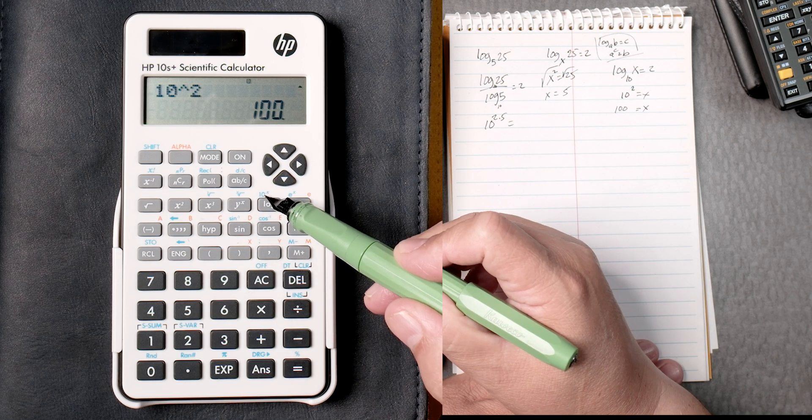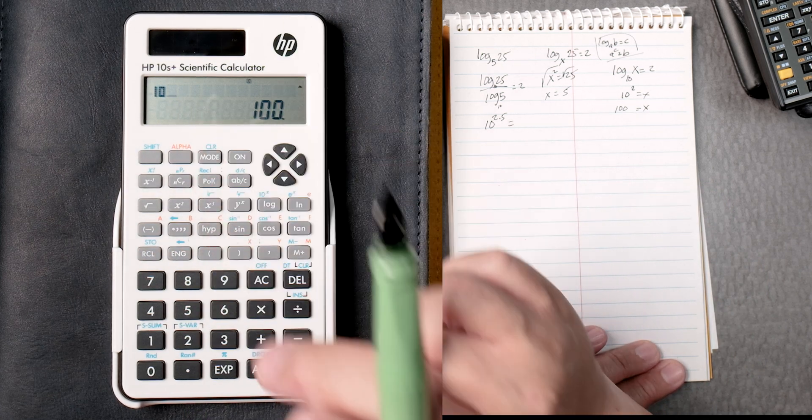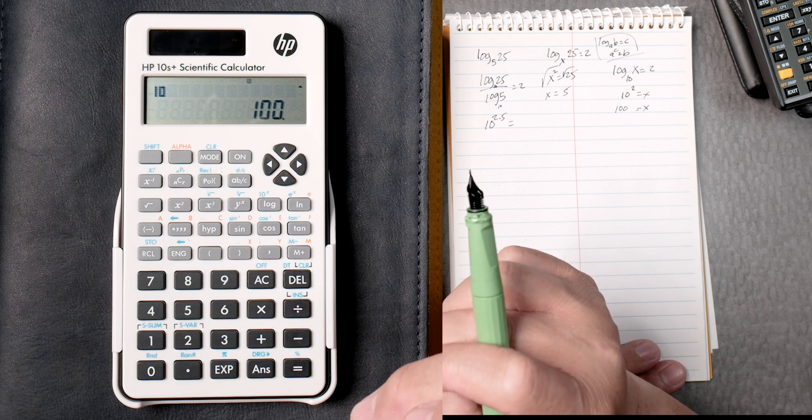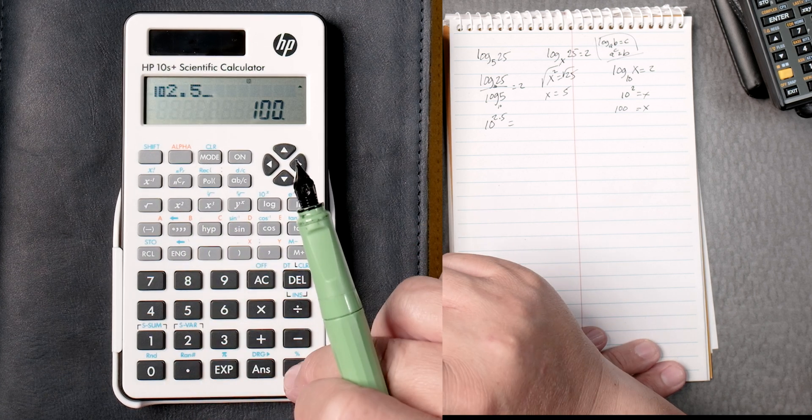There's a 10 to the x key. So we press shift, log key. That gives you 10. And let's say 0.25. Let's see if that works.